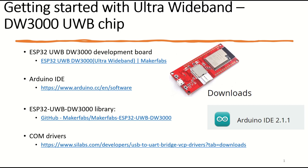Let's get started with a UWB board. We'll be using the DW3000 series UWB chip produced by Makerfab. You can use any chip available — there are a lot of players like NXP, Qorvo, and even Apple is manufacturing — but this tutorial will mainly focus on the DW3000 series UWB chip by Makerfab.